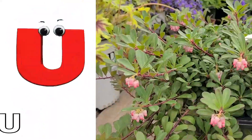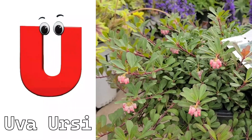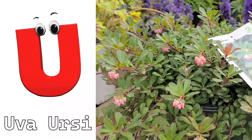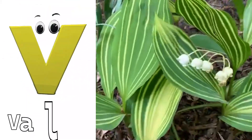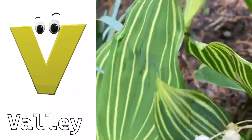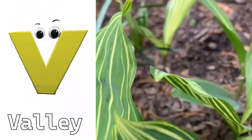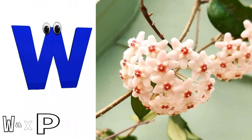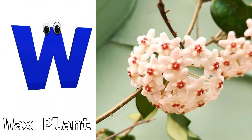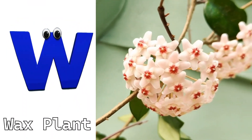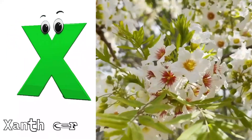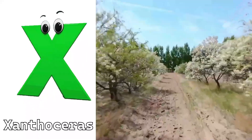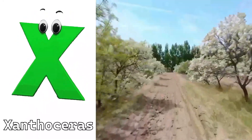U is for Uva Ursi. V is for Valley. W is for Waxplant. X is for Xanthosaurus.